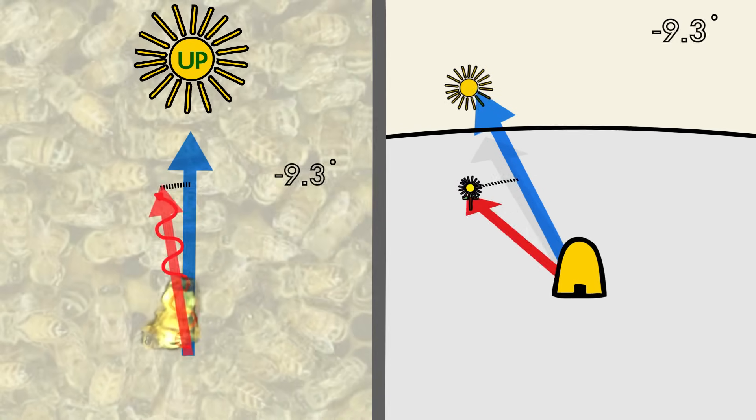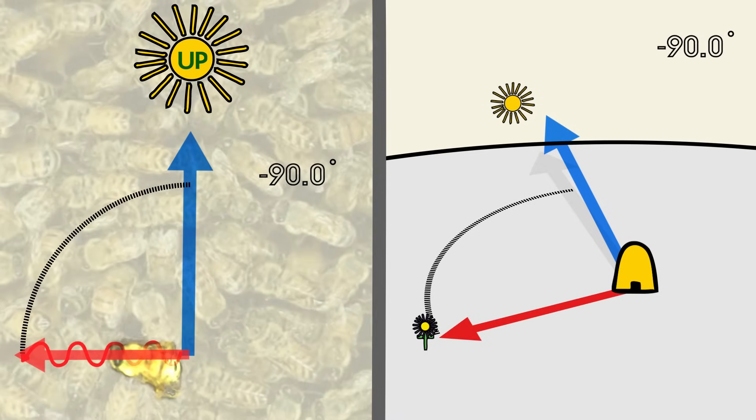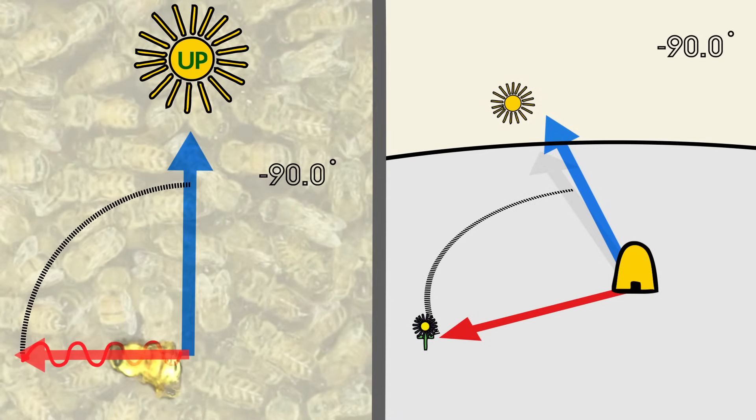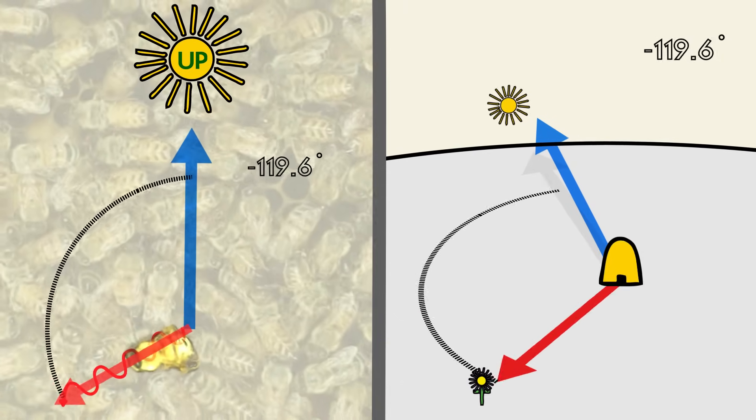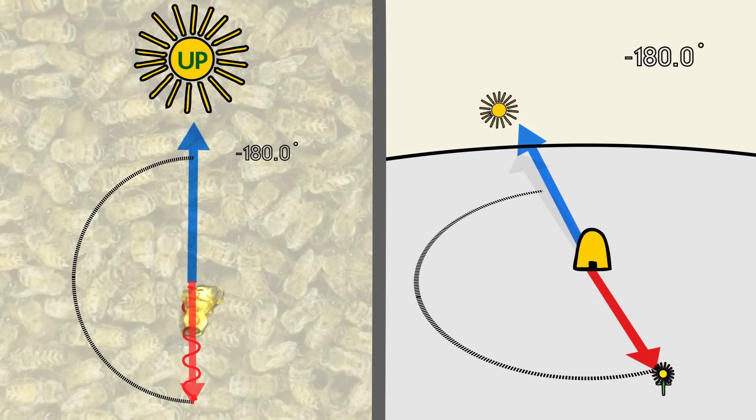If a bee dances 90 degrees to the left, then bees leaving the hive should fly 90 degrees to the left of the sun. A bee angling its dance towards the ground will let others know to fly directly away from the sun.